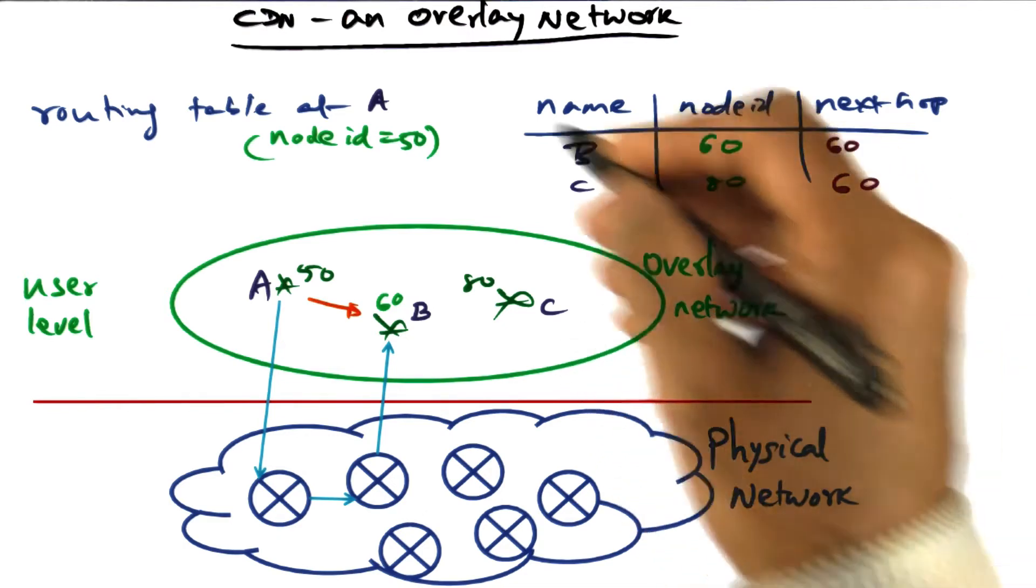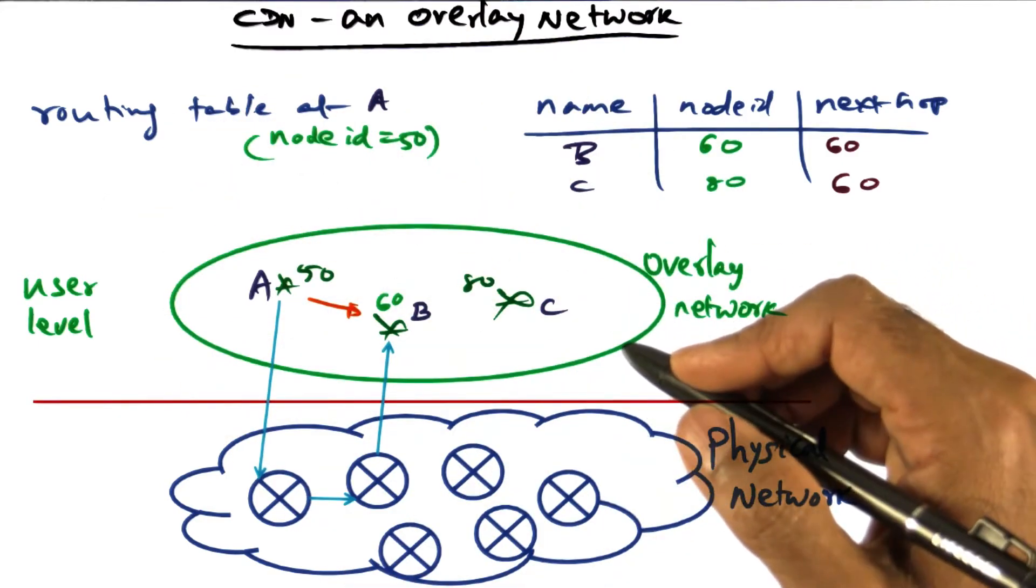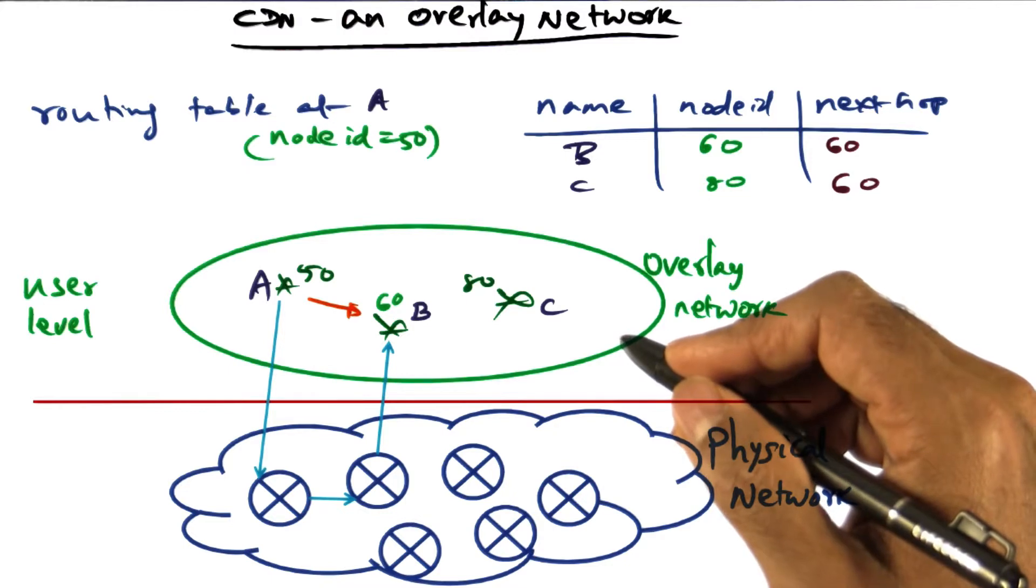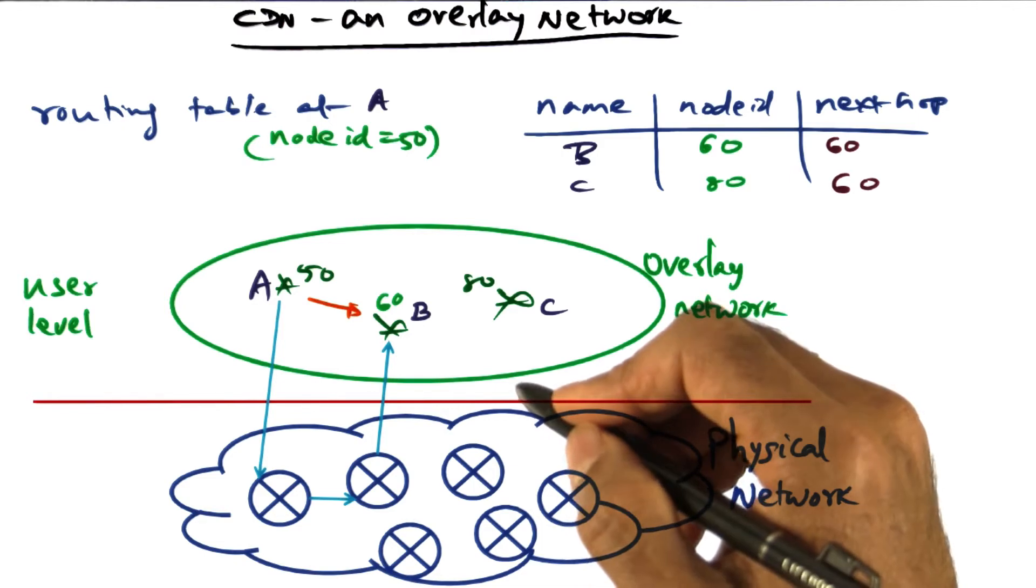So we need, at the user level—because we're doing this sharing of content at the user level—a way of mapping such virtual addresses like 80, 60, and so on, to IP addresses.